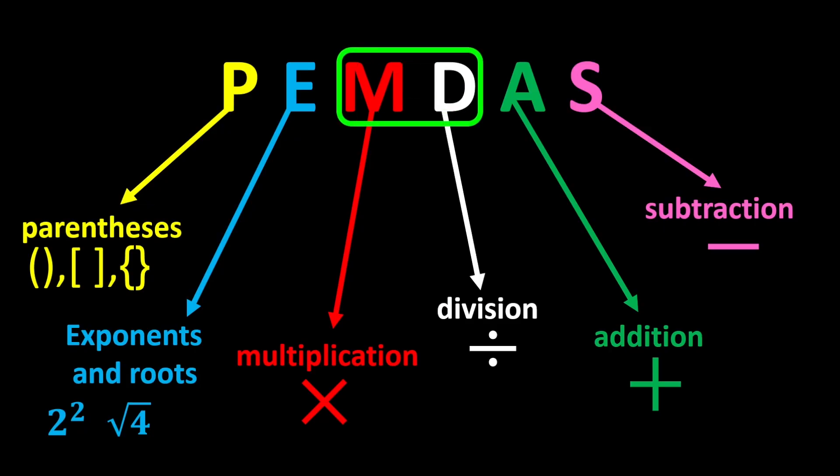Remember that multiplication and division have equal priority. In any expression that has both multiplication and division, we move from left to right and perform whichever we reach first. This rule also applies to addition and subtraction.